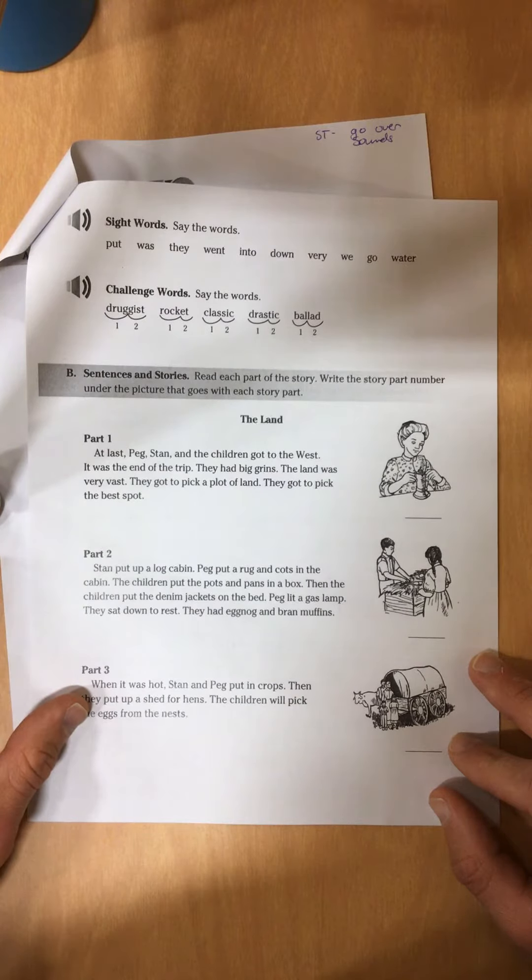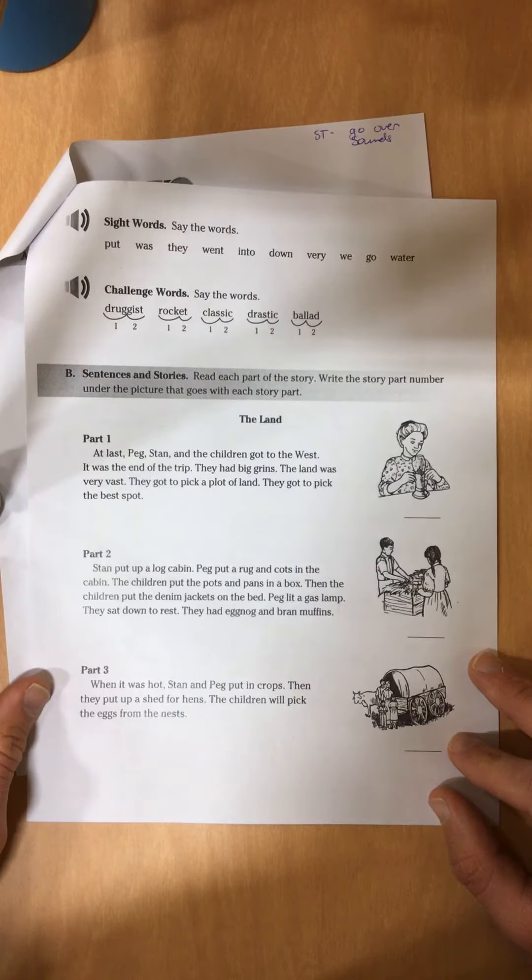The land. Part one. At last, Peg, Stan, and the children got to the west. It was the end of the trip. They had big grins.